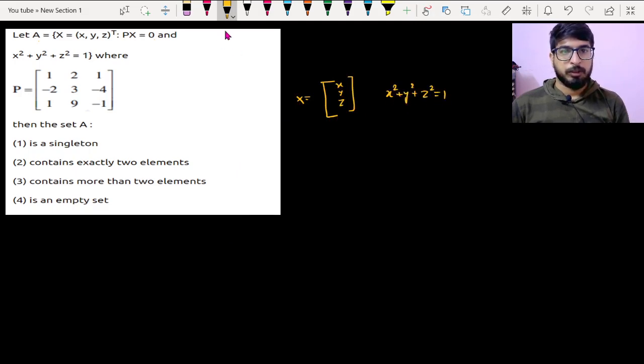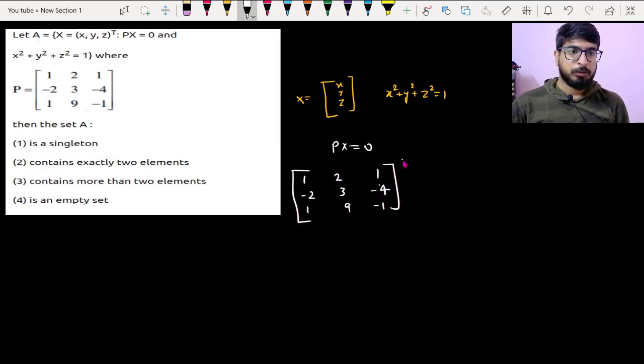Now Px is 0. So let's say P is given: 1, 2, 1, -2, 3, -4, and 1, 9, -1. Now Px, this is 3 by 3 and this is 3 by 1 matrix.